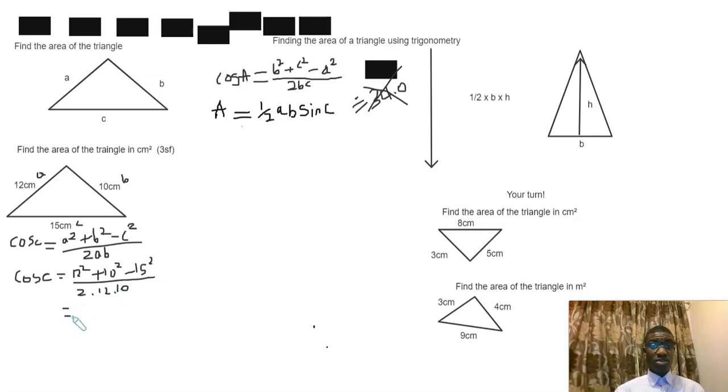Now 12² is 144, 10² is 100, 15² is 125, so your numerator would be 19. Your denominator is 2 × 12, which is 24 × 10, is 240. Okay, so that's cos C.